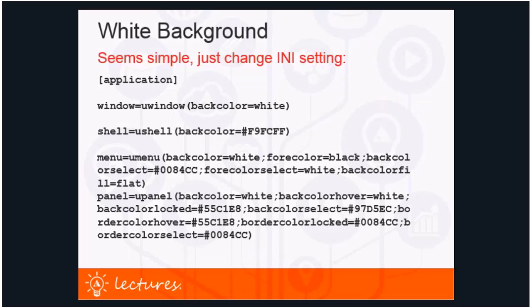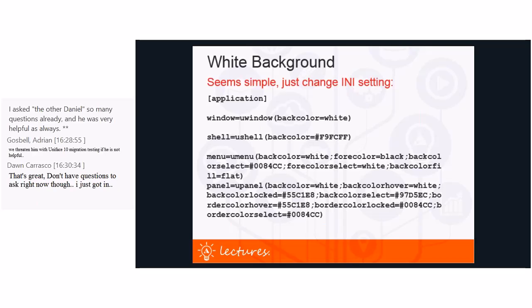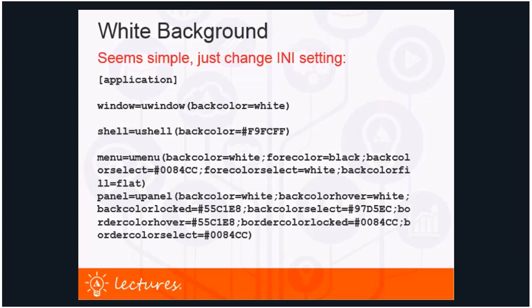This can be accomplished by a simple change in the dot INI file. Included in this step is altering the application shell, menus, and panels so they look nice in combination with the white forms. The current INI file values for Universe 97 UD show back color white for all windows. The application shell was made a very light blue for a subtle color difference; forms got white backgrounds, menus are white with a blue selection color, and panels are white with blue accents.